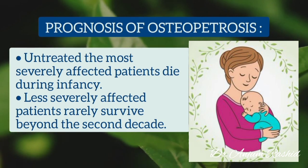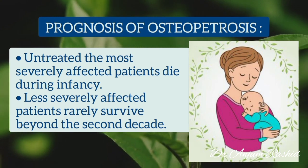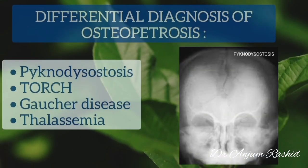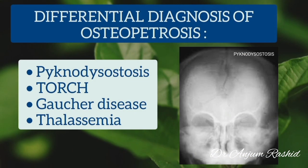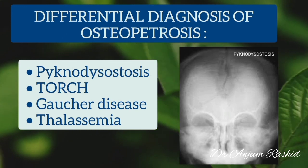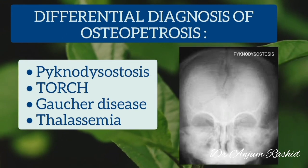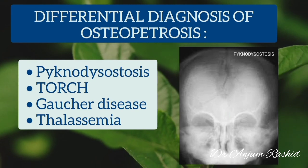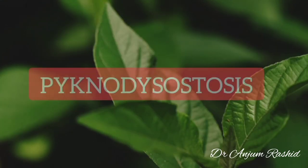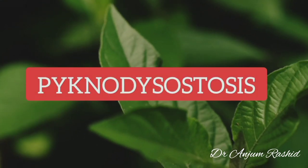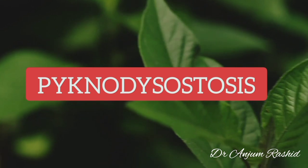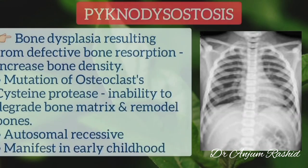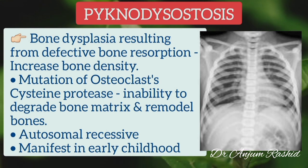Regarding prognosis, untreated, the most severely affected patients usually die during infancy, and the less severely affected rarely survive beyond the second decade. The differential diagnosis of osteopetrosis includes pycnodysostosis, TORCH infection, Gaucher disease, and thalassemia.